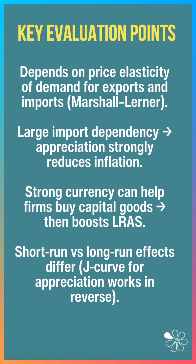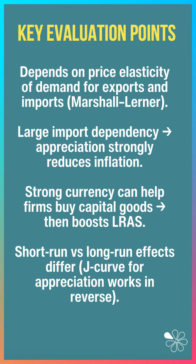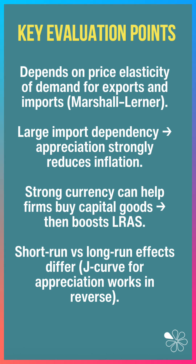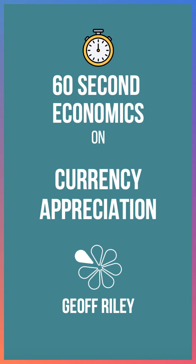The short and long-run effects tend to differ. For example, on the net trade balance, if the currency goes up, you may get the J-curve for depreciation working in reverse — the trade balance may initially improve in the short term.